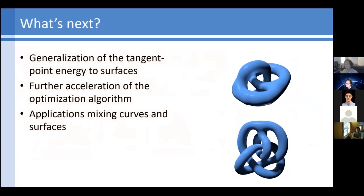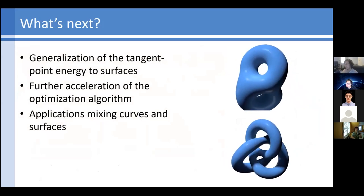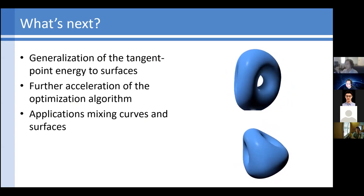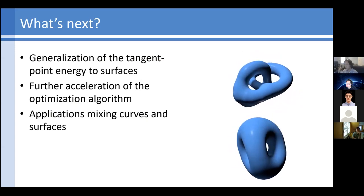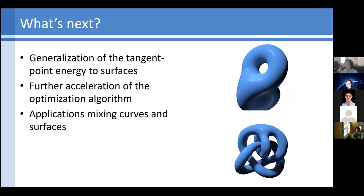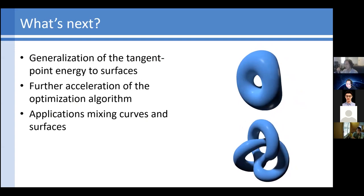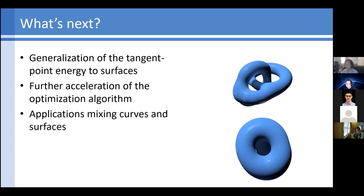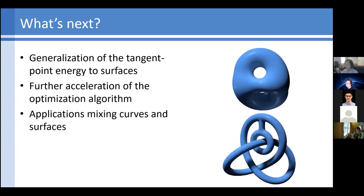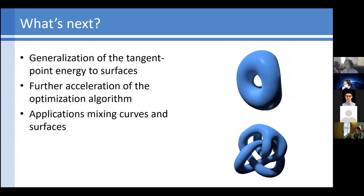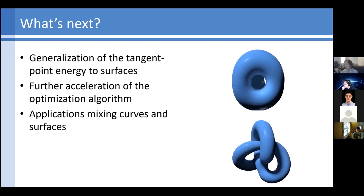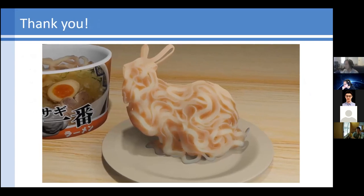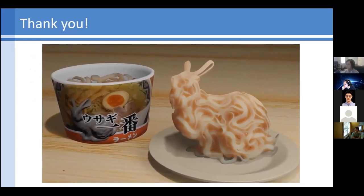What's next? The natural thing is to generalize the tangent point energy to surfaces, and most of the same theory still works — it's just a matter of adapting the discretization and making it faster. These are some preliminary test runs of tangent point energy on surfaces, where you see the same untangling behavior, simplifying the surface into its most basic embedding without changing its isotopy class. We have a lot more work on optimization of the algorithm to support higher resolutions, and in the future we might mix curves and surfaces in a multi-physics type setting. That wraps up my talk on repulsive curves — thank you all for listening.